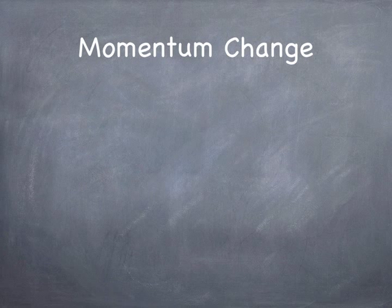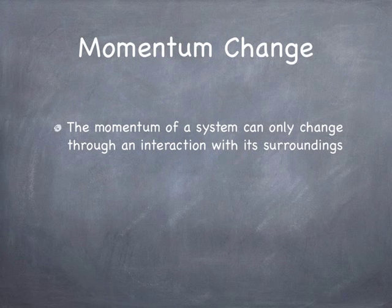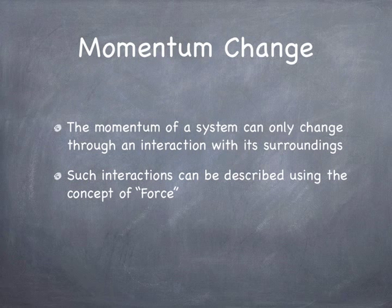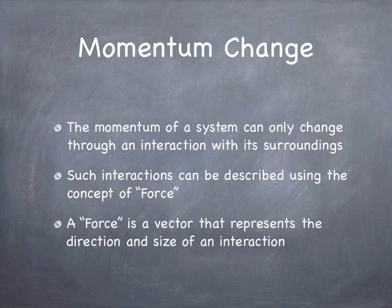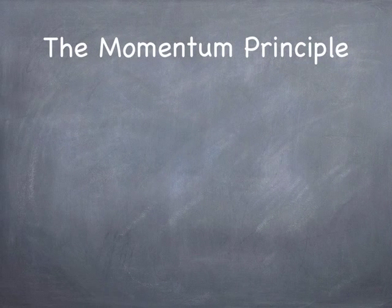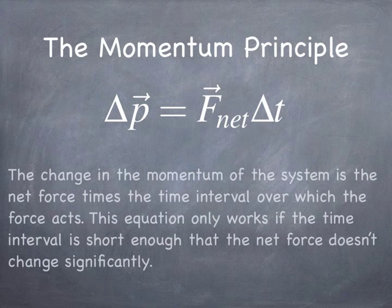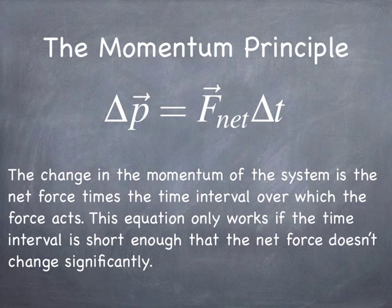The main point of this chapter is the focus on momentum change. The momentum of a system changes when it interacts with its surroundings. Such an interaction can be described using the concept of force — a vector that points in the direction of the interaction, whose magnitude equals the size of the interaction. This boils down to the Momentum Principle: the change in momentum of the system equals the net force times the time over which that force acts.